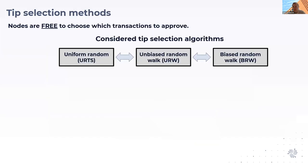In this protocol, there's possibility for different tip selection algorithms because nodes are free to choose the tip selection algorithm. I will focus on uniform random tip selection and then two types of random walks: the unbiased and the biased one.